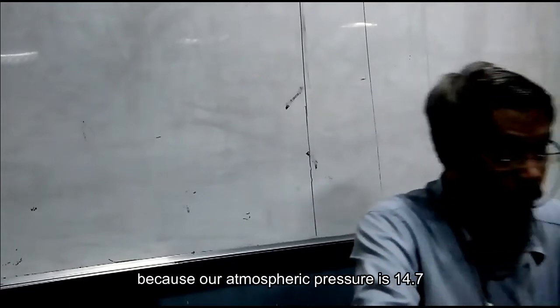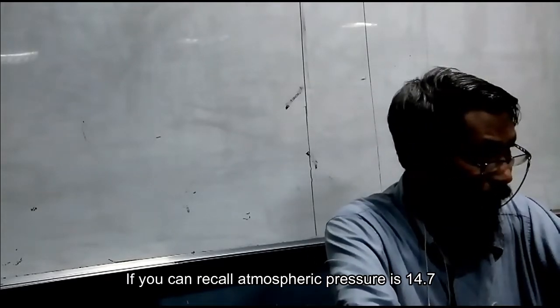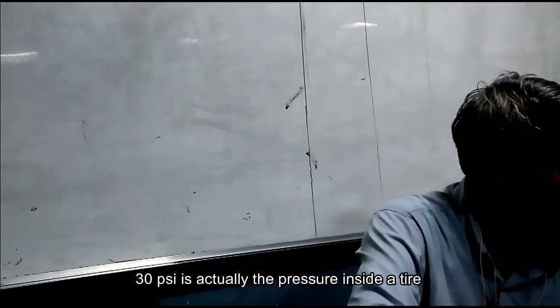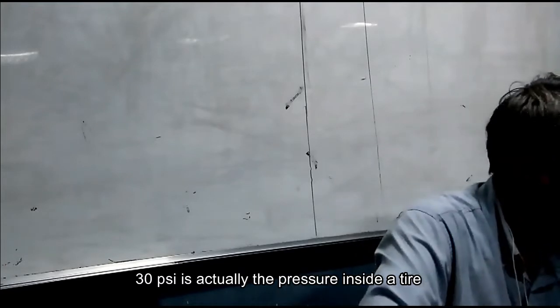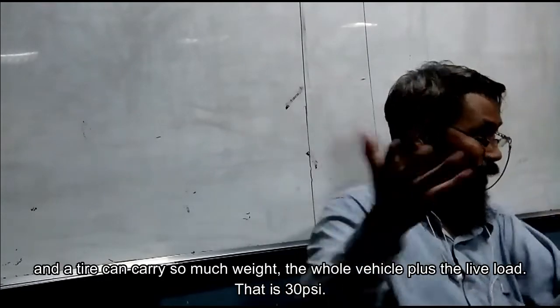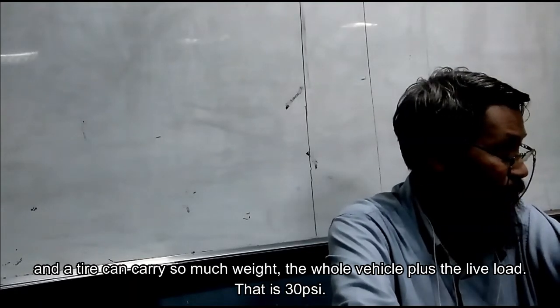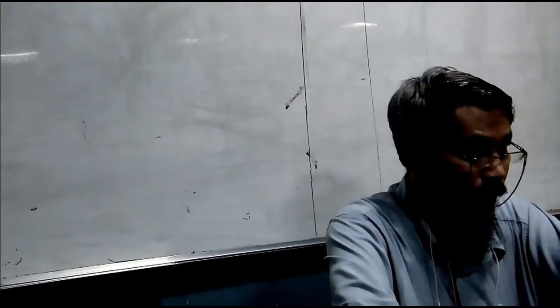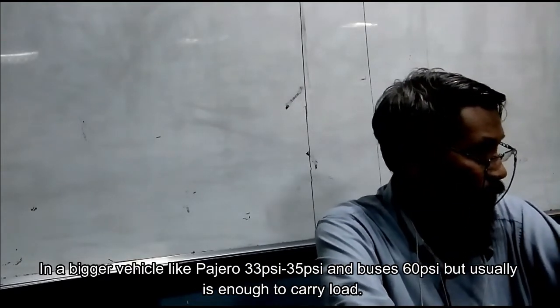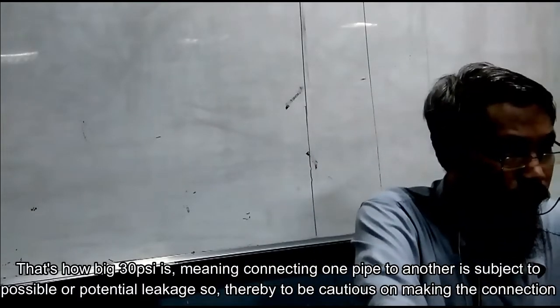30 PSI is a big pressure because our atmospheric pressure is 14.7. If you can recall, the pressure is 14.7. About 7 PSI is a little bit pressure. 30 PSI is actually the pressure inside a tire. And at that, it can carry so much weight, the whole vehicle plus the live load. That is 30 PSI. In a bigger vehicle, like Pajero, 33, 35, and buses, 60 PSI. But usually 30 is enough to carry load. That's how big 30 PSI is.